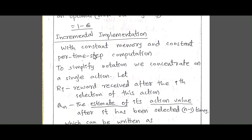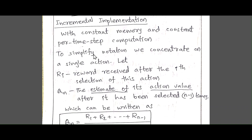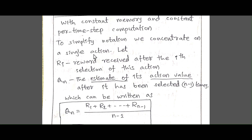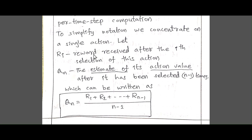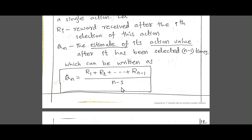Now let's talk about incremental implementation. With constant memory and constant time-per-step computation, to simplify notation we concentrate on a single action. Here, r_i refers to the reward received after the i-th selection of this action — meaning the reward received the i-th time the action is selected. Then Q_n is the estimate of its action value: Q_n = (r_1 + r_2 + ... + r_{n-1}) / (n-1).